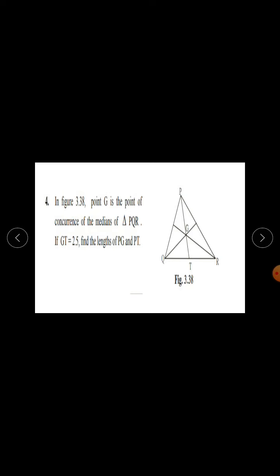Now we will solve question 4 from practice set 3.3. In figure 3.38, point G is the point of concurrence of the medians of triangle PQR. If GD equals 2.5, find the lengths of PG and PT.